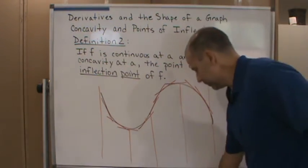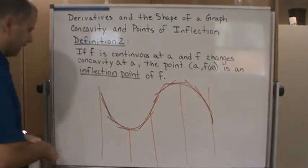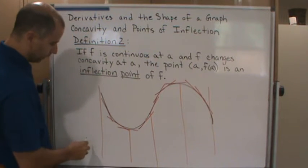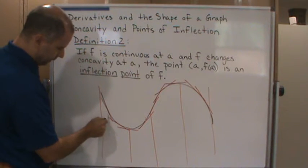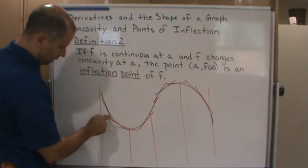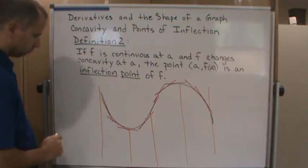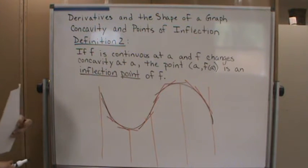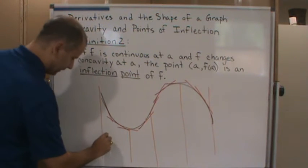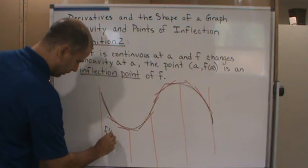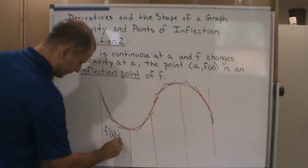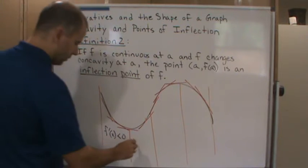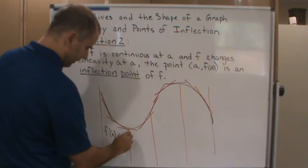If you look at this here, notice that in this interval here the slopes are negative. So that would mean that f prime of x is negative.